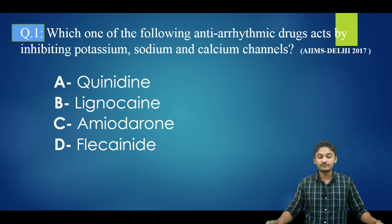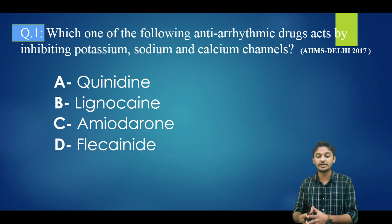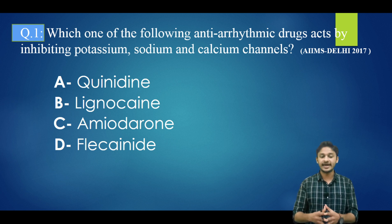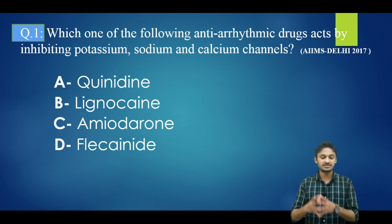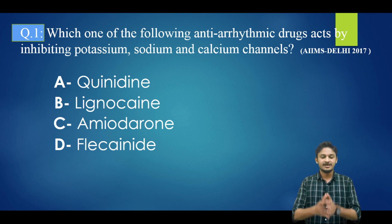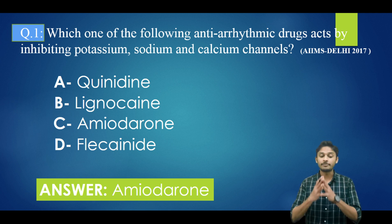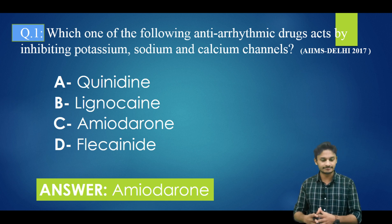Welcome all, let's start this class. Question number one: which one of the following anti-arrhythmic drugs acts by inhibiting potassium, sodium, and calcium channels? Options are: quinidine, lignocaine, amiodarone, flecainide. The correct answer for this question is option C — amiodarone. Amiodarone acts by inhibiting potassium, sodium, and calcium channels.